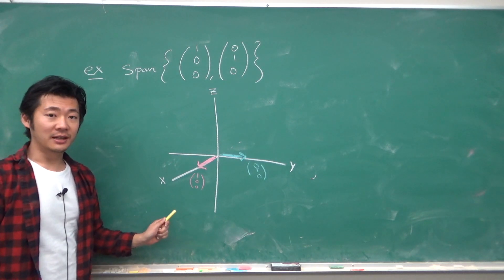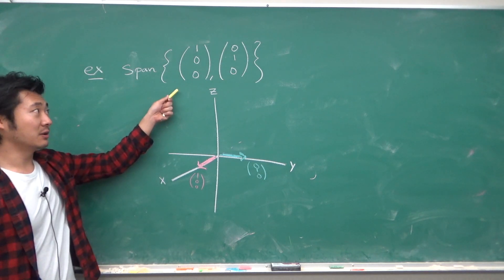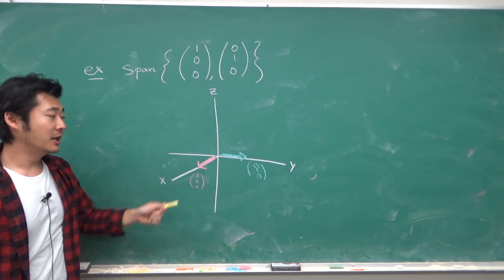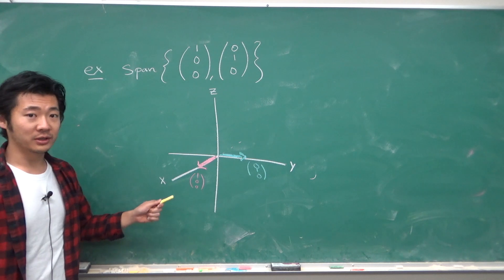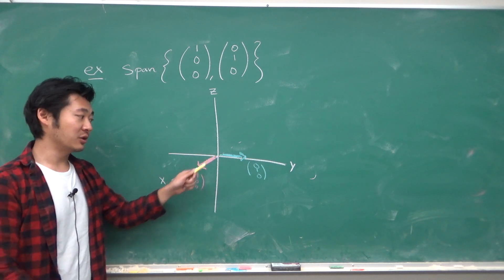Here we can see that a vector in the span of these two vectors 1, 0, 0, and 0, 1, 0 is just a vector that is going to lie on this two-dimensional xy plane.